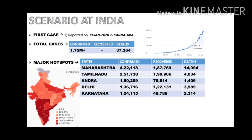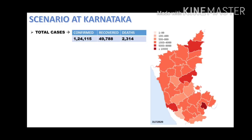Scenario at India: The first case of coronavirus was reported on 30th January 2020 in Karnataka. Total confirmed cases are 1.75 million and deaths up to 37,364. The major hotspots in India are Maharashtra, Tamil Nadu, Andhra Pradesh, Delhi, and Karnataka. Scenario at Karnataka: Till 31st July, Karnataka had confirmed cases of 1,24,115 with a recovery of 49,788 and deaths of 2,314.